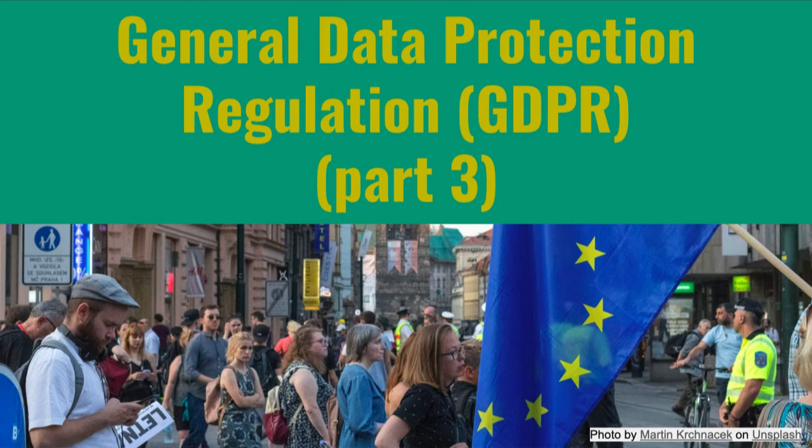At the core of GDPR is personal data. This is the type of information that allows a living person to be directly or indirectly identified from data that's available. Personal data can include something obvious, such as a person's name, location data, or an online username, or it can be something that may be less apparent, such as an IP address.